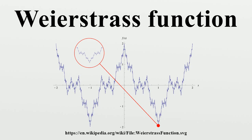This construction, along with the proof that the function is nowhere differentiable, was first given by Weierstrass in a paper presented to the Königlich Academy der Wissenschaften on 18 July 1872.